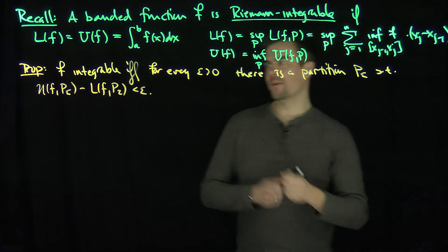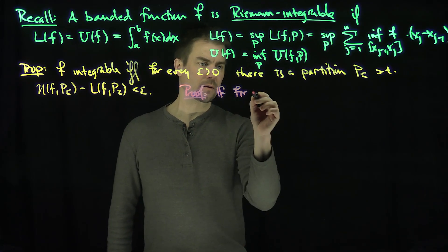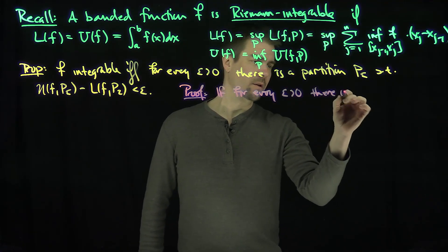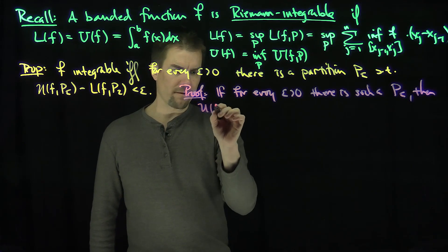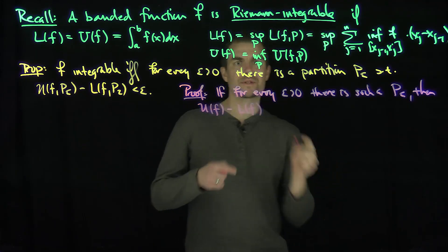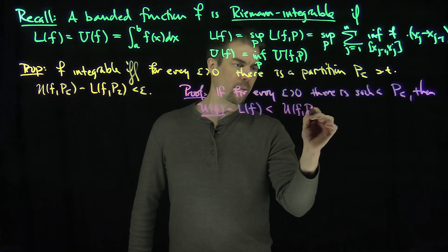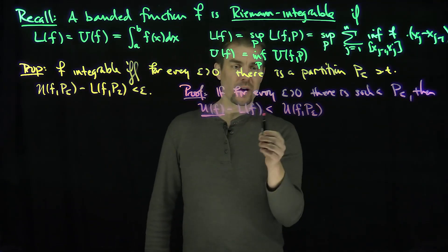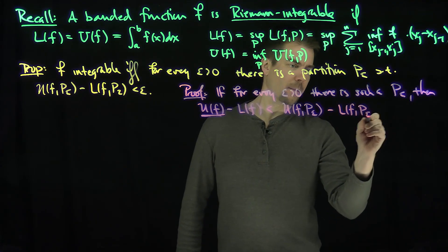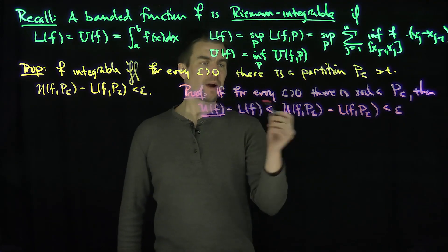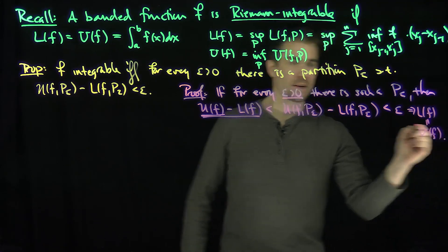So let's prove this proposition. One direction of the proof is straightforward. If for every epsilon there is a partition P_epsilon, then I know that Uf minus Lf — well, Uf is the infimum, so I can make this larger by replacing it with U(f, P_epsilon). And Lf is the supremum, so I can make the whole thing bigger by subtracting off the smaller quantity L(f, P_epsilon). By assumption that's less than epsilon for any epsilon. So for every epsilon greater than zero, Uf minus Lf is less than epsilon, which implies Lf equals Uf, and that implies F is Riemann integrable.